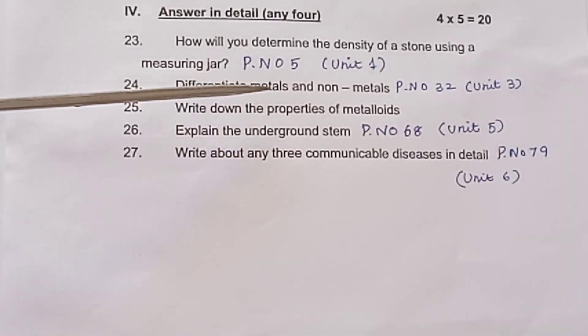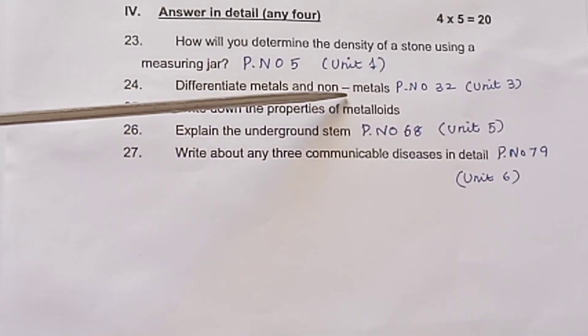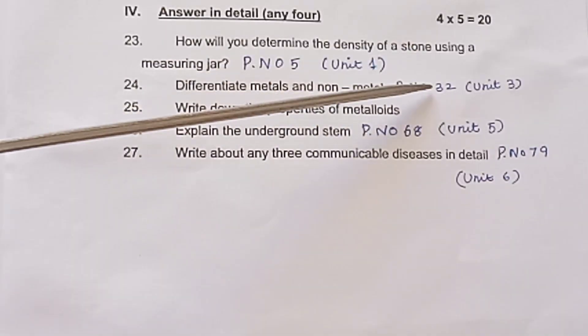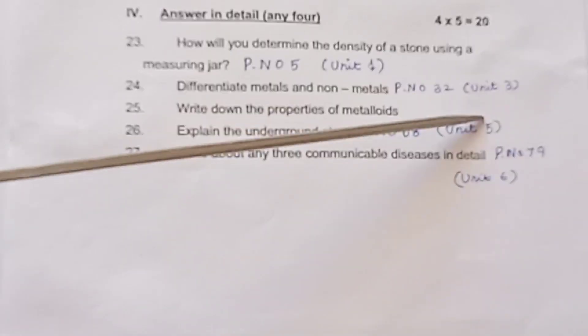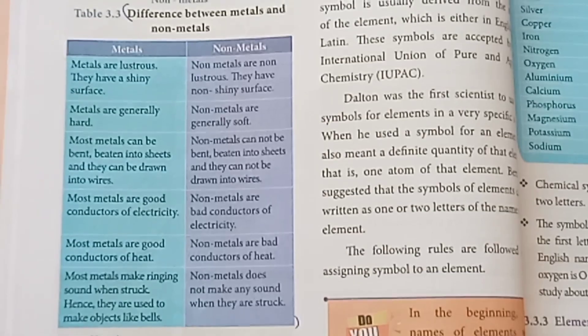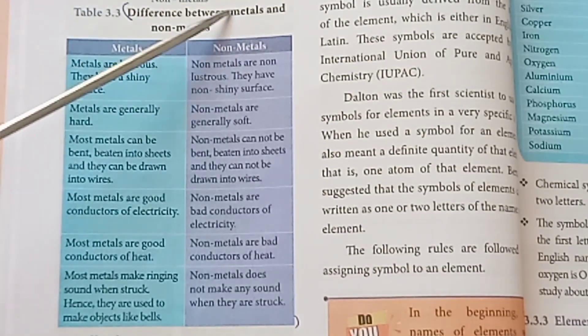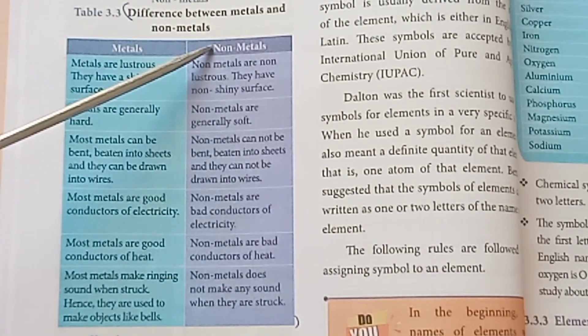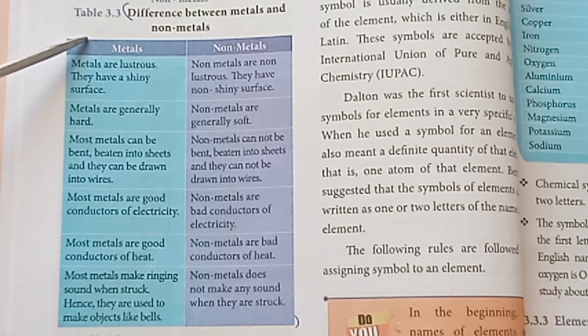Question 24: Differentiate metals and non-metals. Page number 32, Unit 3. Answer: Write the differences between metals and non-metals in a tabular form as given on page 32.